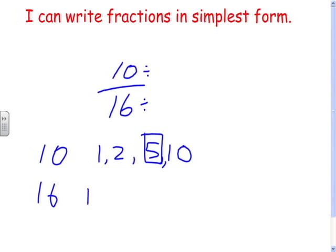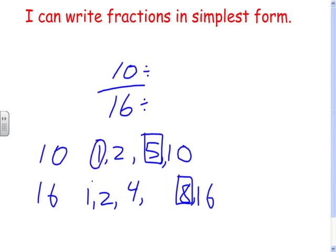Now for 16: 1 times 16, 2 times 8, 4 times 4. Three, five, six, and seven don't work. So the factors of 16 are 1, 2, 4, 8, and 16. The common factors between 10 and 16 are 1 and 2, so the greatest common factor is 2.